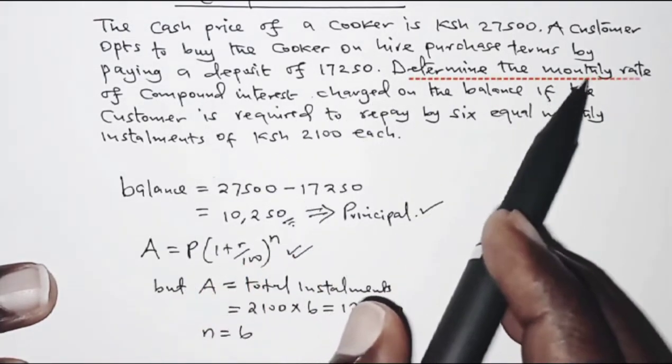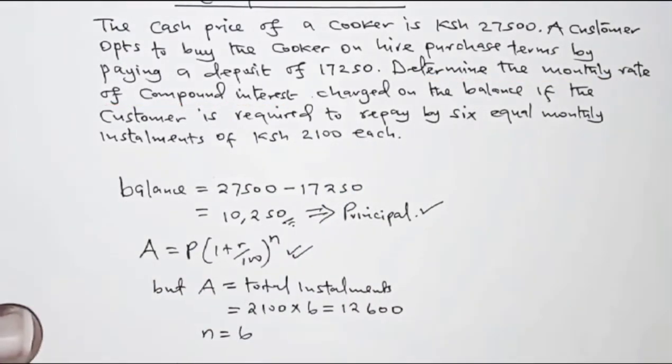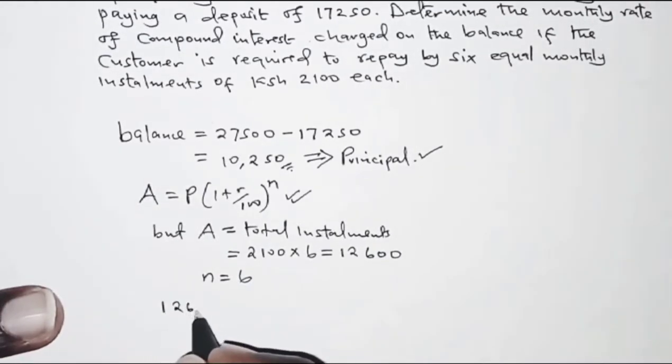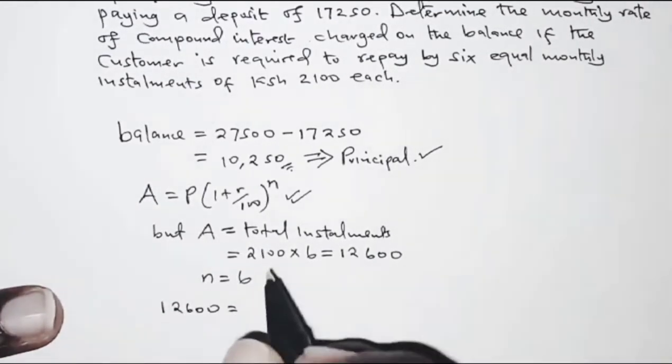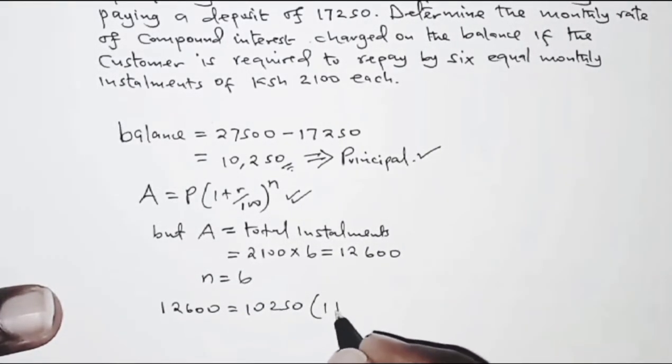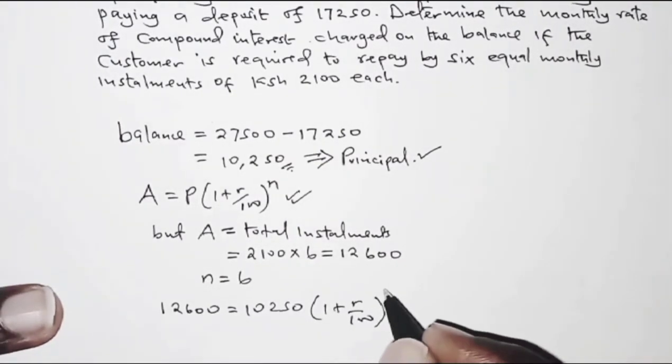We are required to get the monthly rate of compound interest charged on the balance. So amount is 12,600 and that equals the principal which is 10,250 times 1 plus the rate over 100 raised to power 6.